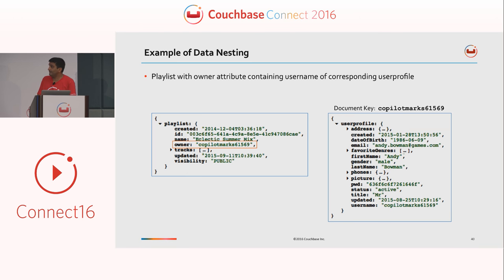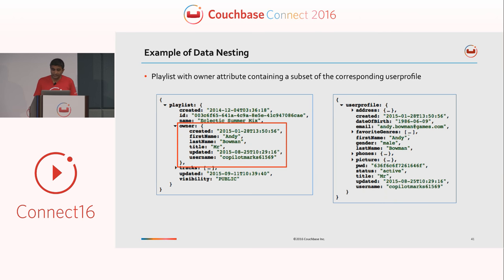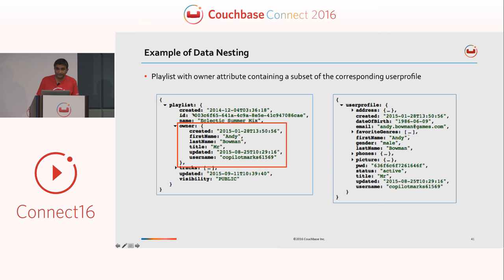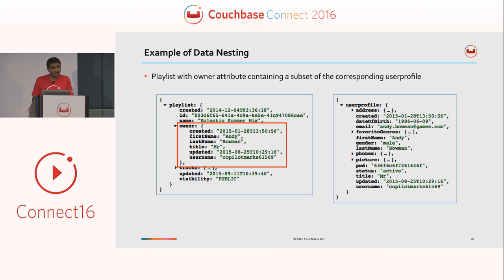While you could do it differently: look at this approach. You have the same playlist document, but instead of just the owner ID, you embed not all the attributes but some of the attributes. The advantage is you retrieve this document and get the playlist plus the most important owner attributes. If you want something more, you can always do a separate get for that as well. So when do you go with nesting, or when do you go with references?